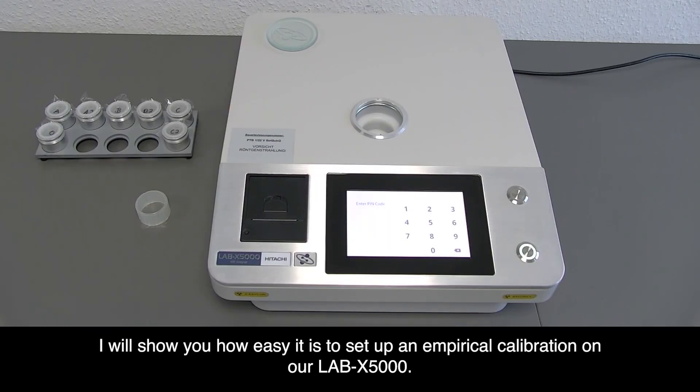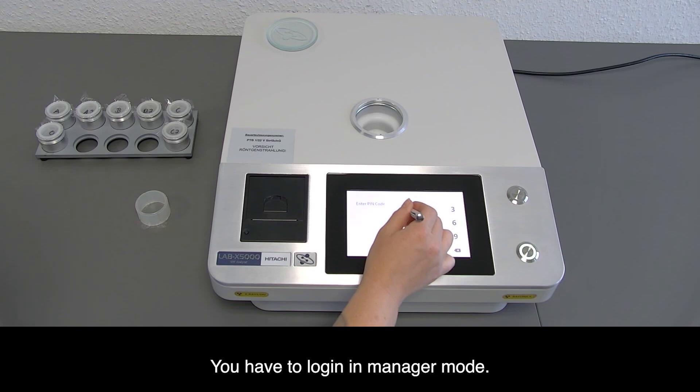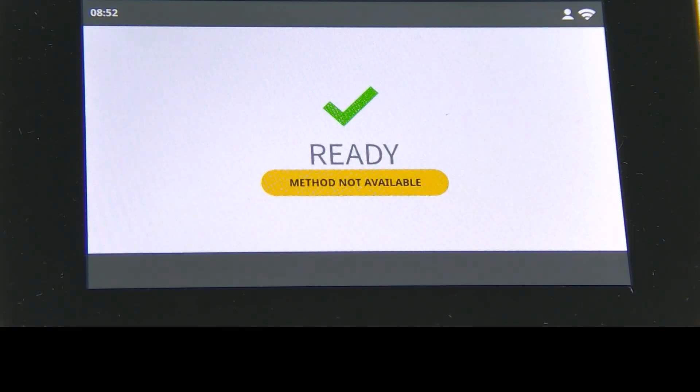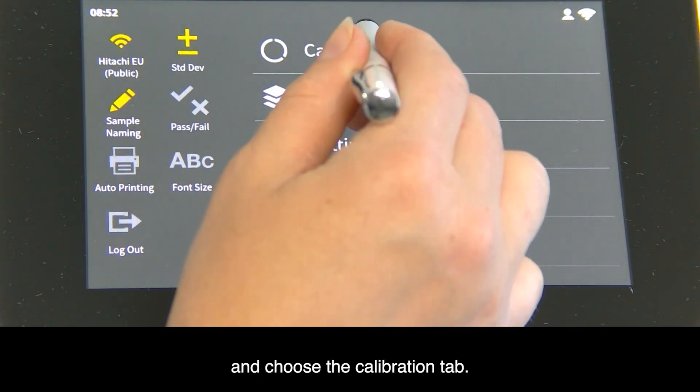I will show you how easy it is to set up an empirical calibration on our LAB-X5000. Just enter the pin code, log in to manager mode, scroll down and choose the calibration tab.